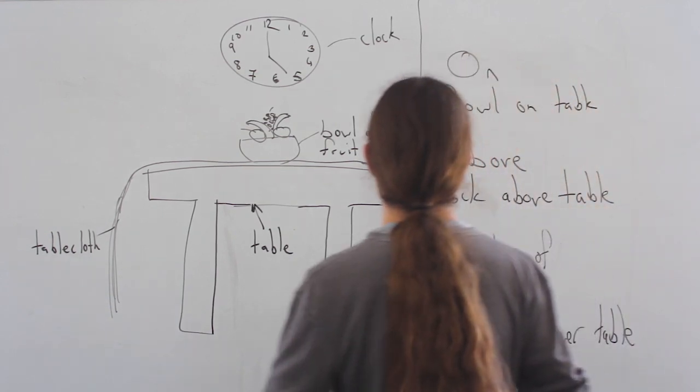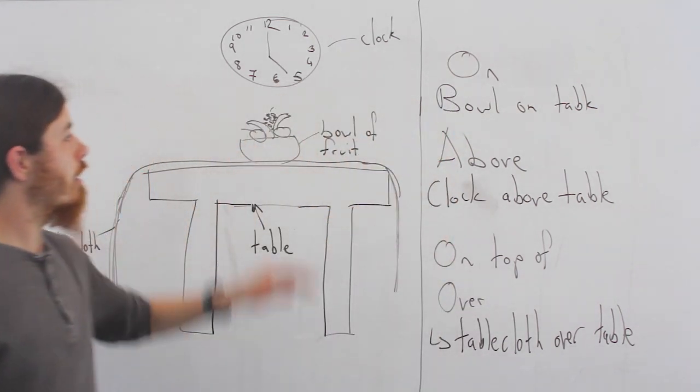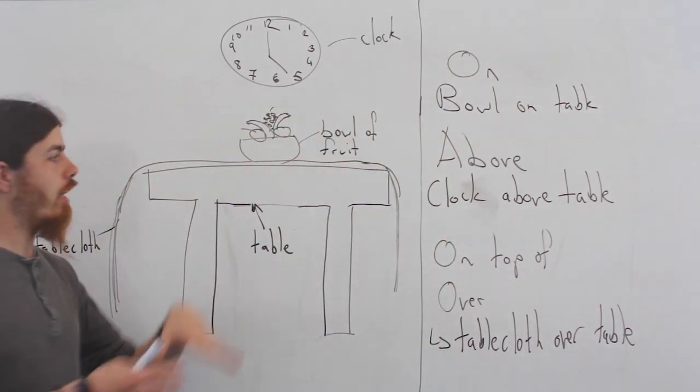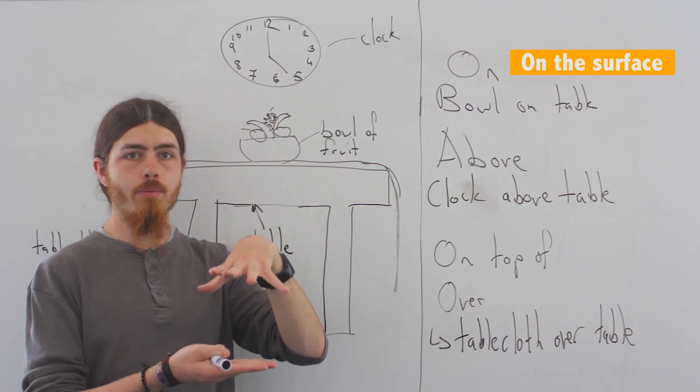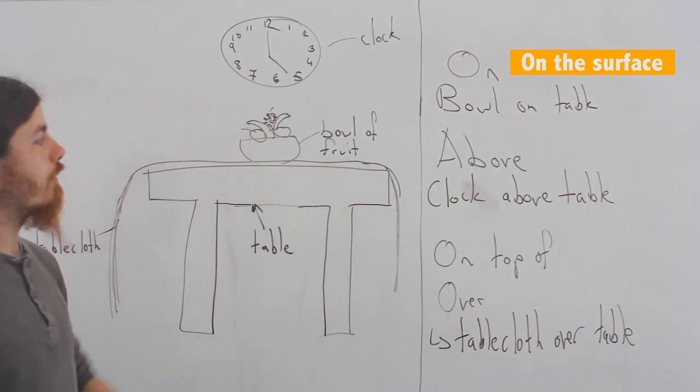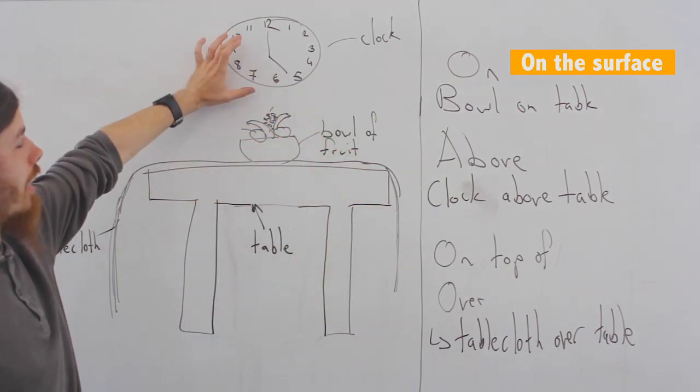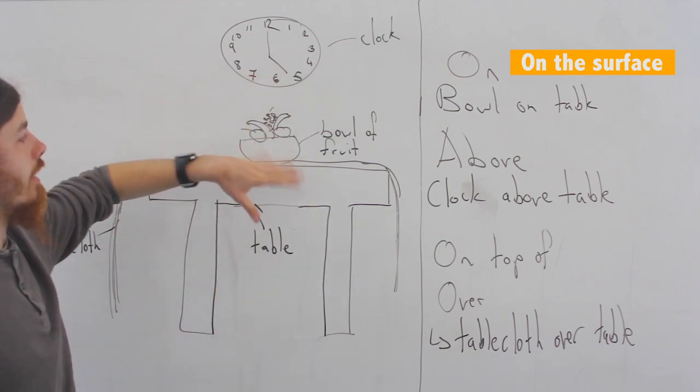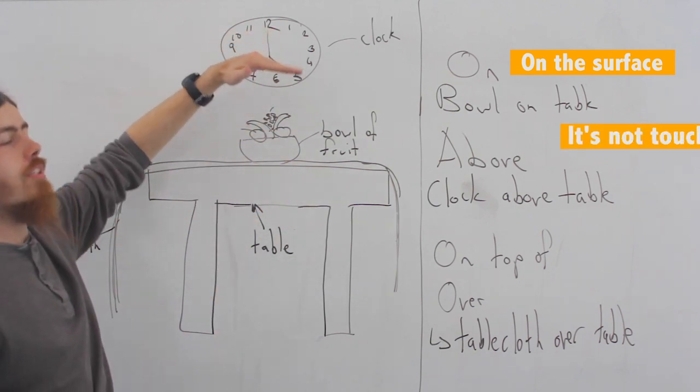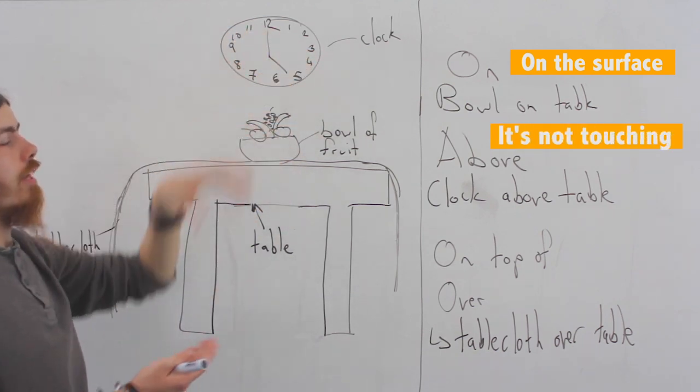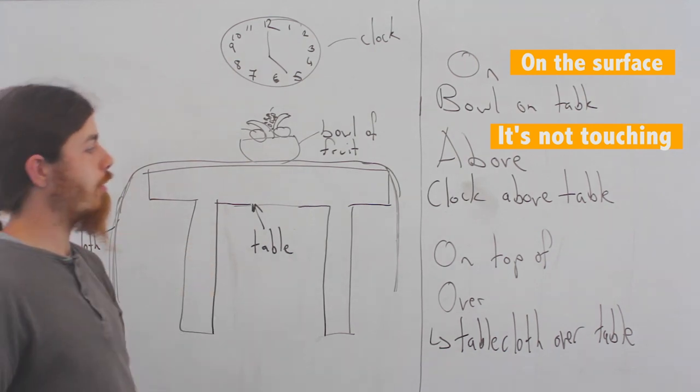Now, why do we do this? Well, with on, the bowl of fruit is physically on the surface of the table. With above, we'd say the clock is above the table because it is over it, but it is not touching it. So it is not physically in contact. It is above the table.